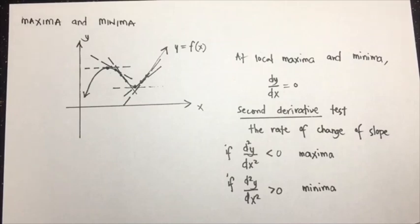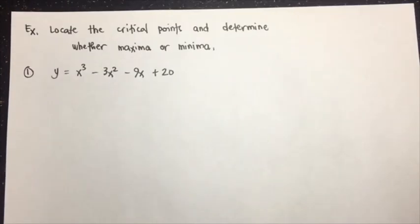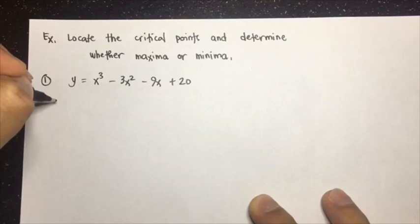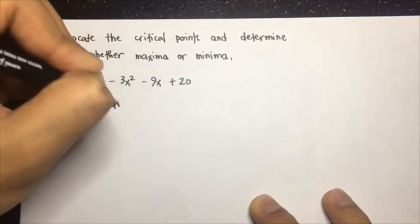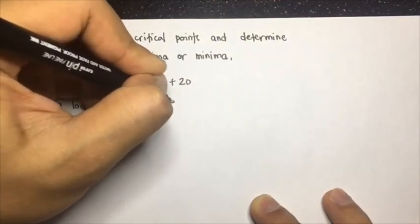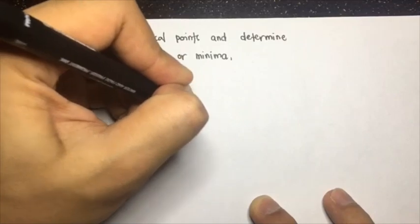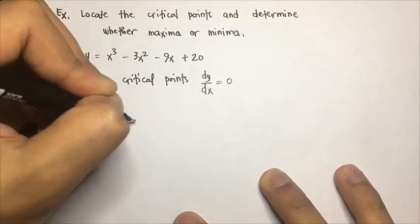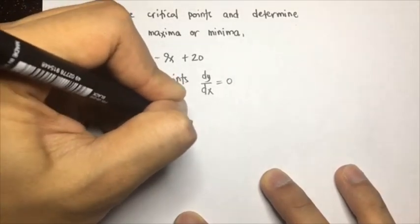Let's try to apply that on some problems. For example number one: locate the critical points and determine whether those points are maxima or minima. We have y = x³ - 3x² - 9x + 20. We will do this without graphing, using only differential calculus. To locate the critical points, set the derivative to zero.